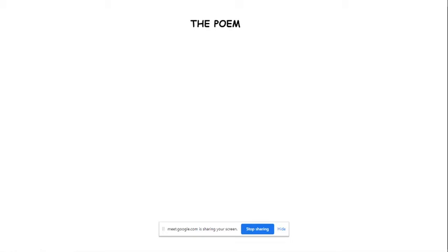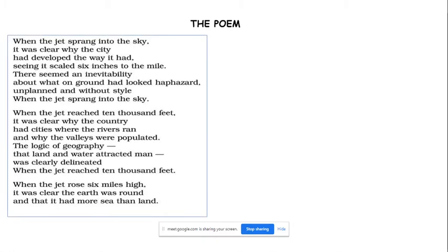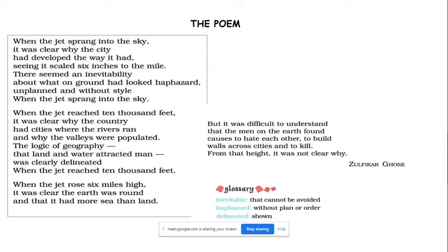Now we are going to deal with the poem. The first paragraph says: 'When the jet sprang into the sky, it was clear why the city had developed the way it had, seeing it scaled six inches to the mile.' The jet is an aeroplane which is springing up into the sky. 'Sprang' is the past tense of 'spring,' meaning to jump up. As the aeroplane jumped up into the sky, it became clear to the author why the city had developed the way it had.